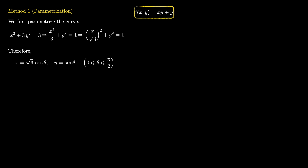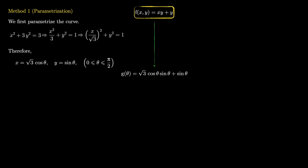Now my function f(x, y) = xy + y. I replace x with √3 cos θ and y with sin θ. This reduces the function of two variables to another function g, which is a function of one single variable θ. We know the recipe for maximizing and minimizing g: I reduced the problem of maximizing and minimizing f to maximizing and minimizing g(θ) for θ in the closed interval [0, π/2].